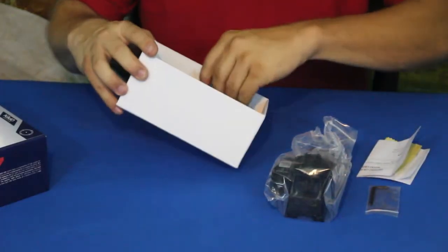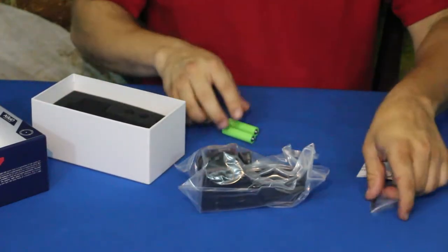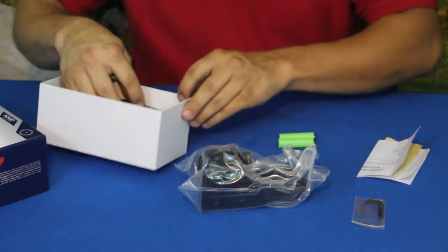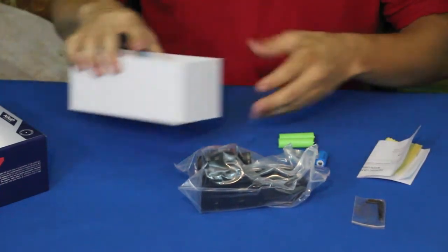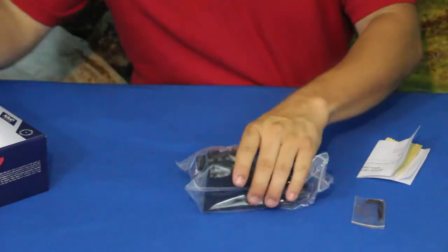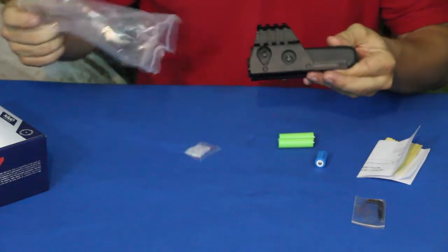Here we go. We've got some of the standard stuff - the sight itself, your standard wrenches, and the batteries. They came with a couple different kinds here.